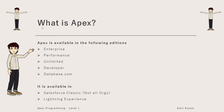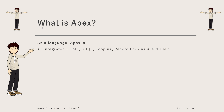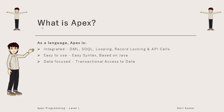It is available in Salesforce Classic but not in all orgs, whereas it is available in Lightning Experience in all orgs. If you are not aware of the difference between Salesforce Classic and Lightning Experience, I recommend going through the admin certification course or Trailhead. As a language, Apex is integrated — we can perform DML, SOQL, looping, record locking, and API calls all within Apex itself. It's easy to use because the syntax is based on Java syntax.